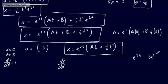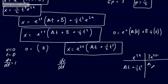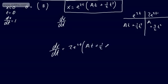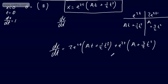Using the product rule on x = e^(2t)(at + (1/2)t³), dx/dt = 2e^(2t)(at + (1/2)t³) + e^(2t)(a + (3/2)t²). Substituting t = 0 and dx/dt = 1: 1 = 2e^0(0 + 0) + e^0(a + 0) = a.